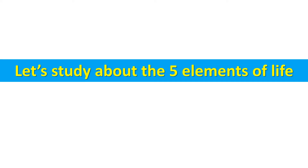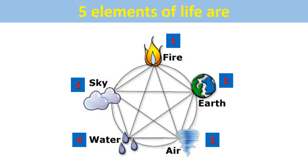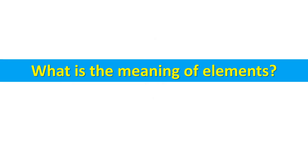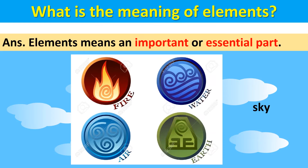Now let's study about the 5 elements of life. The 5 elements of life are: number 1, fire; number 2, earth; number 3, air; number 4, water; and number 5, sky. The word 'elements' means an important or essential part — something which is important. Fire, water, air, earth, and sky are all important for us to live, which is why they are called the 5 elements of life.